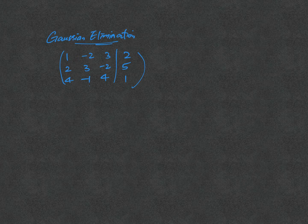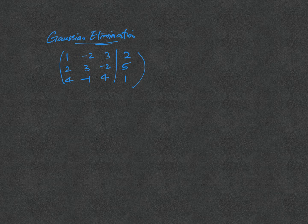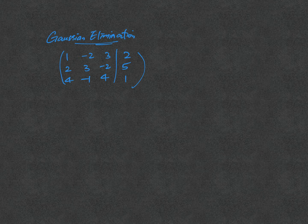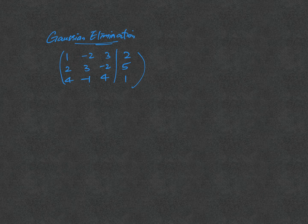In this video, we will come across an example where Gaussian elimination tells us that the system has no solution. Here is the example.